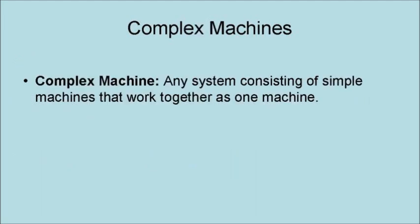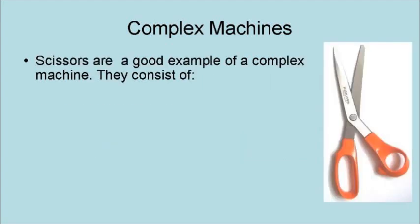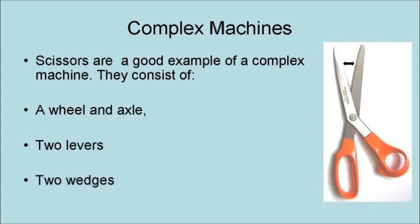A complex machine is any system consisting of simple machines that work together as one machine. A complex machine can be as simple as a pair of scissors or as complex as a spaceship. Scissors are a good example of a complex machine. They consist of a wheel and axle, two levers, and two wedges.